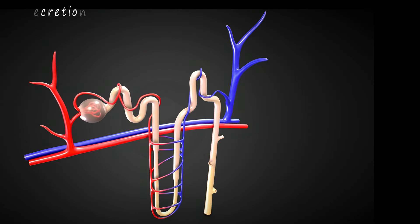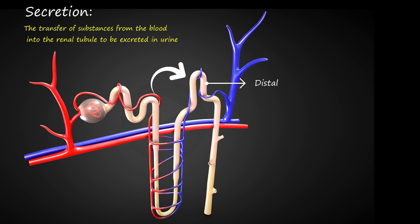Secretion involves the transfer of substances from the blood into the renal tubule to be excreted in urine. This occurs mainly in the distal convoluted tubule and collecting duct.